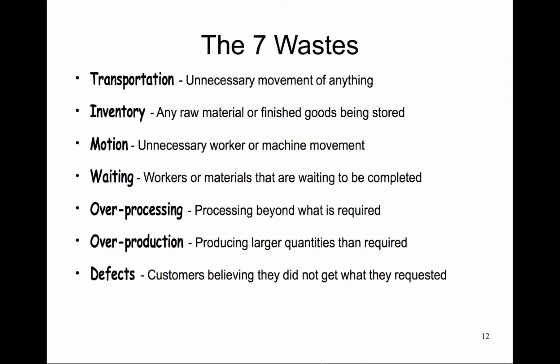Lean identifies seven types of waste. Transportation: the unnecessary movement of anything — people, information, or material. An example is looking around for a needed part in a warehouse. Inventory: any raw material or finished good being stored. There are three types of inventory in Lean — raw material, work in progress (WIP), and finished goods. The concern is with the space and lead times of the inventory; we want to keep it moving to shorten the cash cycle.